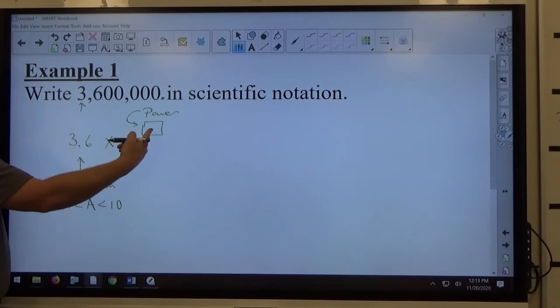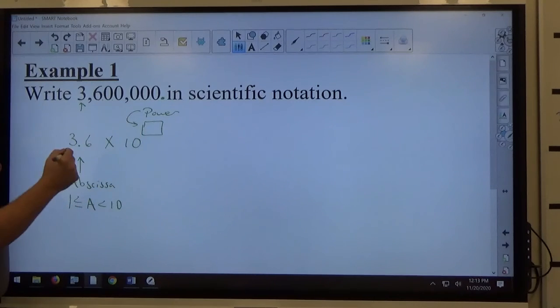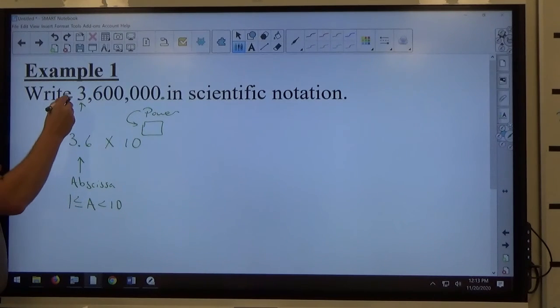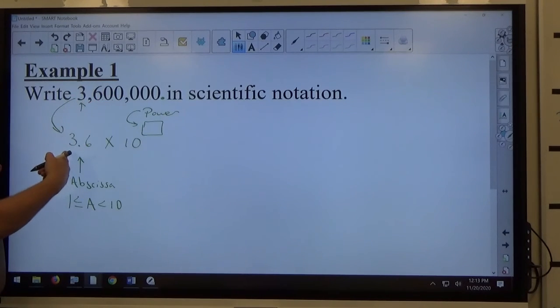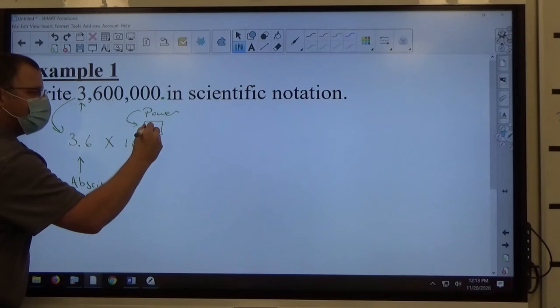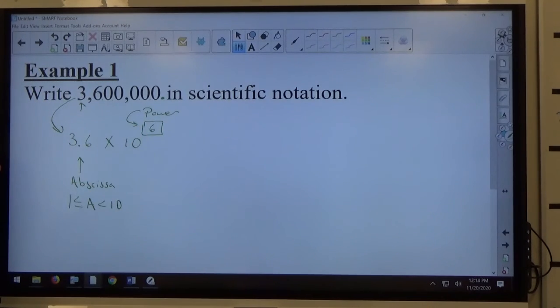So this is either six or negative six. And then again, it's just a matter of asking myself what happened. So from here to here, 3,600,000 got smaller to make 3.6, right? So the power is going to be bigger to account for it. So positive six.